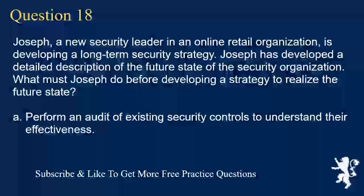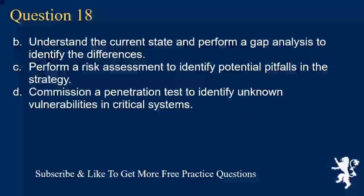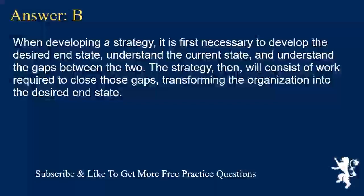Question 18. Joseph, a new security leader in an online retail organization, is developing a long-term security strategy. Joseph has developed a detailed description of the future state of the security organization. What must Joseph do before developing a strategy to realize the future state? A. Perform an audit of existing security controls to understand their effectiveness. B. Understand the current state and perform a gap analysis to identify the differences. C. Perform a risk assessment to identify potential pitfalls in the strategy. D. Commission a penetration test to identify unknown vulnerabilities in critical systems. Answer B. When developing a strategy, it is first necessary to develop the desired end state, understand the current state, and understand the gaps between the two. The strategy will then consist of work required to close those gaps, transforming the organization into the desired end state.